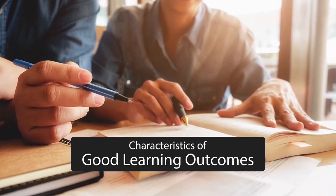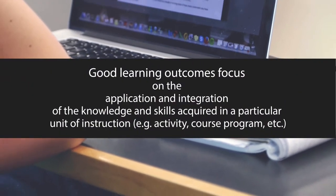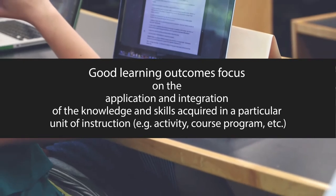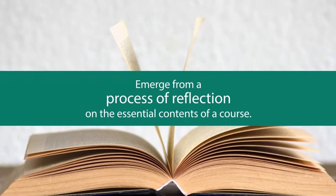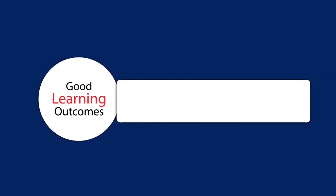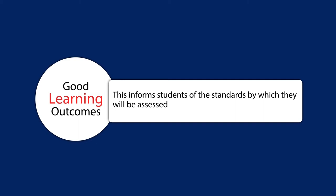What are the characteristics of good learning outcomes? Good learning outcomes focus on the application and integration of the knowledge and skills acquired in a particular unit of instruction — for example, an activity, course, or program — and emerge from a process of reflection on the essential content of a course. More specifically, good learning outcomes should be very specific and use active language and verbs in particular that make expectations clear.